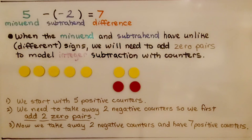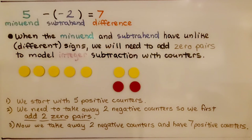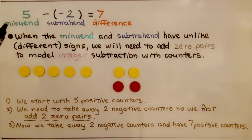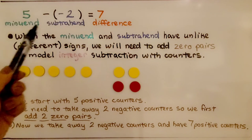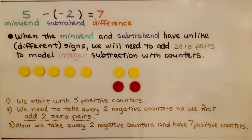If you remember from grade school, the first number in a subtraction problem is the minuend. We take away the subtrahend, and the answer is the difference. An easy way to remember: the letter M comes before the letter S in the alphabet, so the minuend is first, then the subtrahend. When the minuend and subtrahend have unlike — that is, different — signs, we will need to add zero pairs to model integer subtraction with counters.